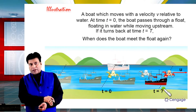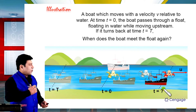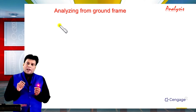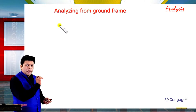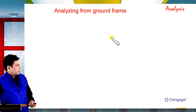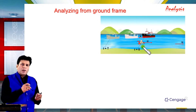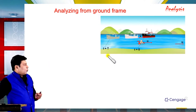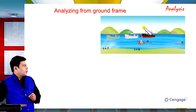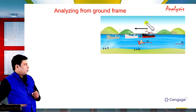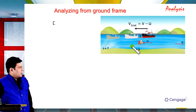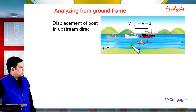We can solve this problem by two methods: using the ground frame of reference, and using the water frame of reference. Let us first analyze using the ground frame. Taking rightward direction as positive, the velocity of the boat with respect to water is negative (upstream), so the velocity of the boat with respect to ground equals v minus u. Suppose the boat travels distance x in time capital T while moving upstream.